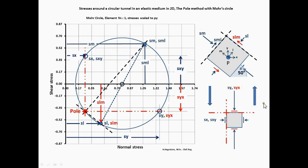In the application, the opposite procedure is shown. Given all the stresses S-X, S-Y and S-X-Y acting at the vertical and horizontal planes respectively of the element, the stresses at the 50 degrees rotated element are to be determined. The procedure is identical with the previous one. Mohr's circle is found with the stress points S-X, S-X-Y and S-Y, S-Y-X. The pole is found with the intersections of Mohr's circle and the lines drawn parallel to the element's horizontal and vertical planes through the corresponding stress points. The stresses S-M, S-M-L and S-L, S-L-M are found with the lines through the pole parallel to the planes of the 50 degrees rotated element.